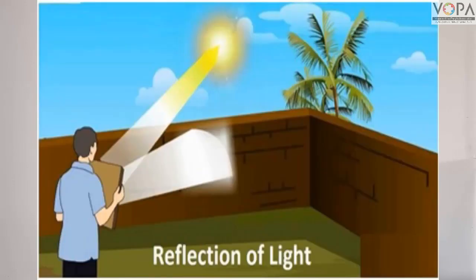Last time we saw the propagation of light. Now we are discussing the reflection of light. How do we see an object? The rays of light falling on an object from the source of light are thrown back from the surface of that object. This is called reflection of light.